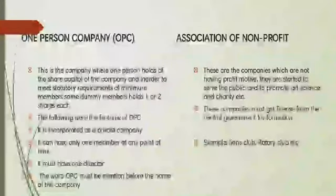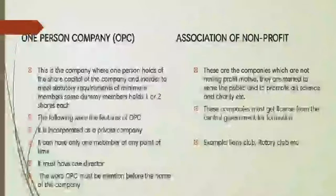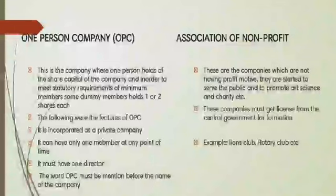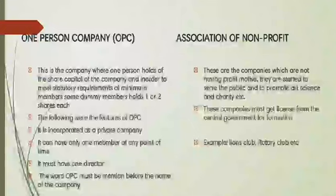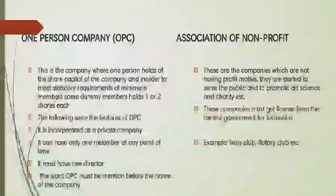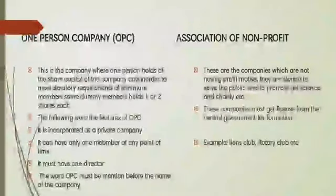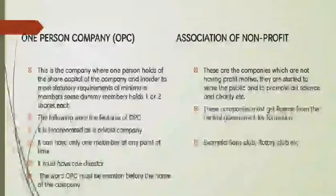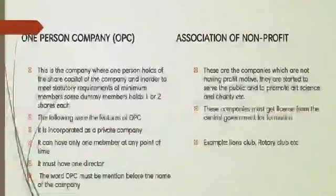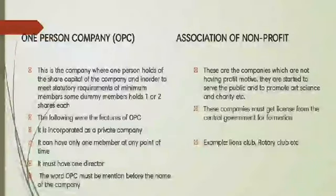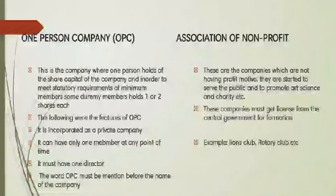The third type is One Person Company, also called OPC. In an OPC, only one person holds the majority of shares. Since a private company requires a minimum of two members, another person holds one or two shares to meet the statutory minimum. This type of company can only be a private company, not a public company. The entire control is in the hands of one person who holds the majority of shares.